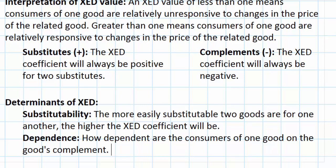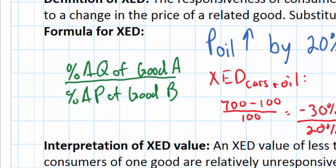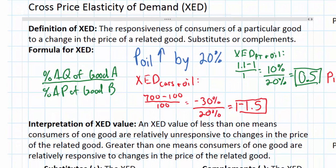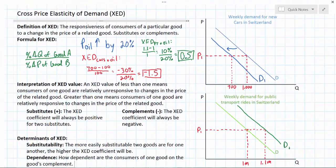To summarize: the more dependent one good is on its complement, the higher the XED coefficient should be between those two goods; and the more substitutable two goods are, the higher the XED coefficient should be for two substitutes. To recap, XED is calculated using the same formula as the other types of elasticity — the only difference from PED is that we're looking at two related goods. The example we used was oil: an increase in the price of oil caused demand for cars to decrease and demand for public transportation to increase. Unlike PED, which is always negative due to the inverse relationship between price and quantity demanded, XED can be negative for complementary goods or positive for substitute goods. How high the absolute value of the XED coefficient is depends on how closely substitutable or how dependent two goods are on one another.